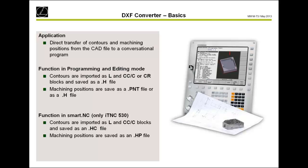We will see this later on the programming station. On the iTNC 530, there is a special kind of programming called Smart NC, where special file types are used: the .hc file for contours and the .hp file for machining positions. Normally we use the conversational program with contours described by L sentences or machining positions in a .h file.